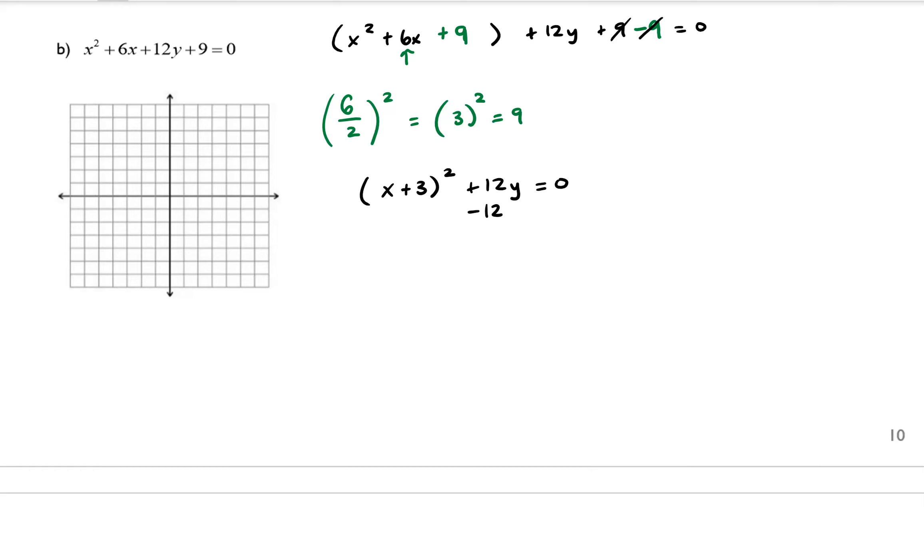This 9 and this -9 will cancel out. And we'll be left with = 0. From here, I can subtract 12y on both sides. And we're going to get (x + 3)² = -12y. Now, this is in a form that we might be able to recognize. And hopefully, you're able to recognize that this is going to be an example of a parabola.